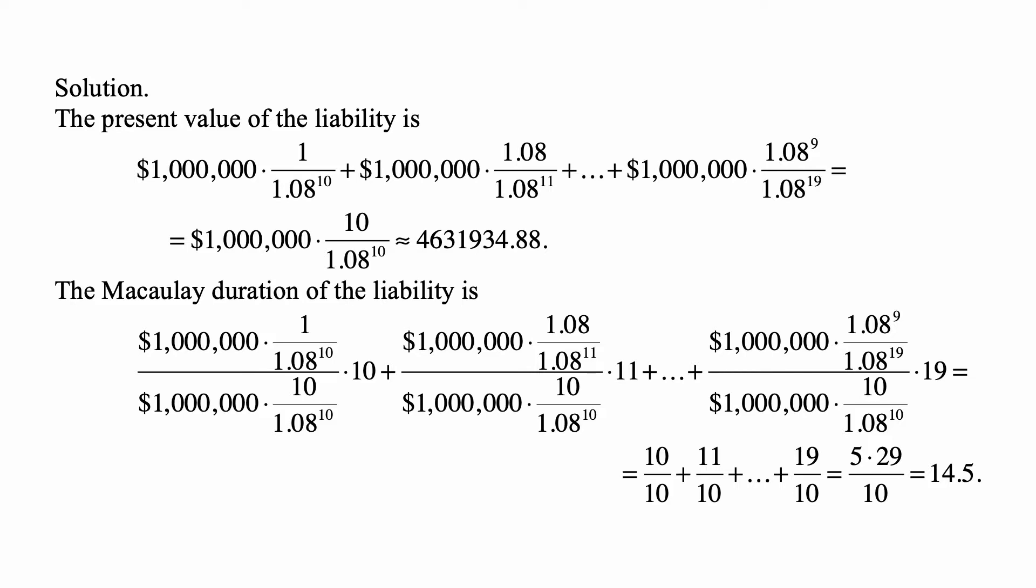So we can see, again, that things cancel out, and in the first expression, what we're left with is 10 over 10, the second one is 11 over 10, and so on, through the last one, which is 19 over 10.